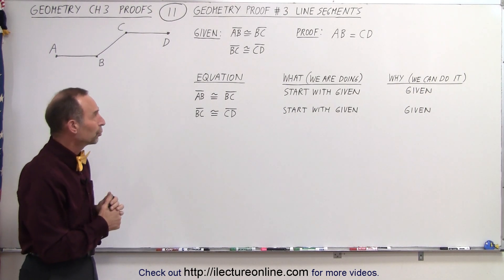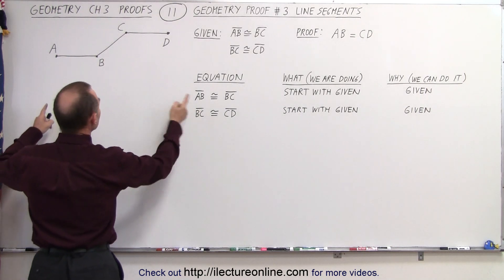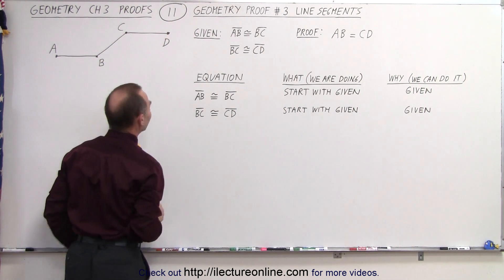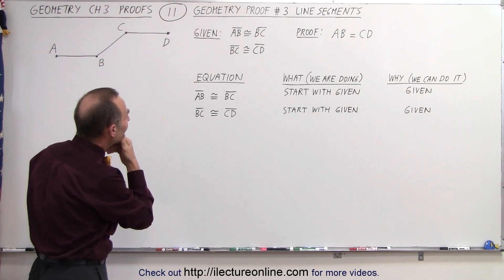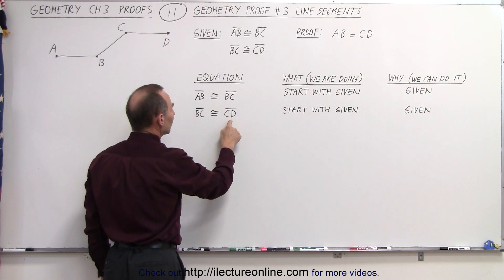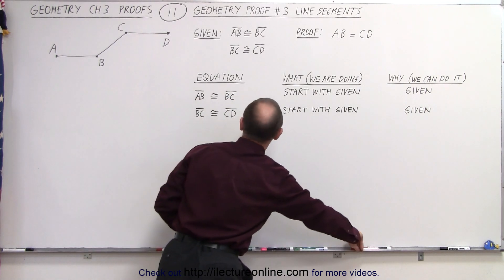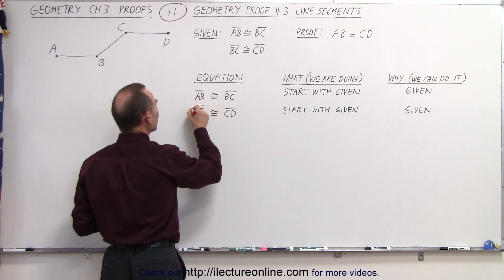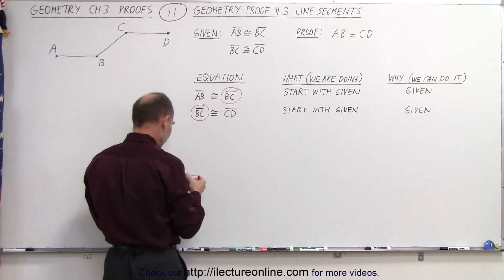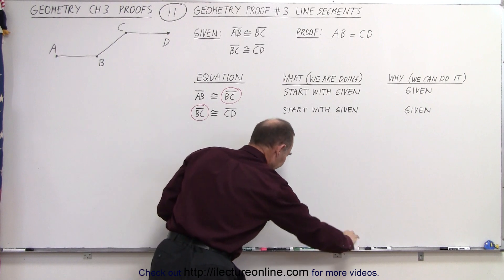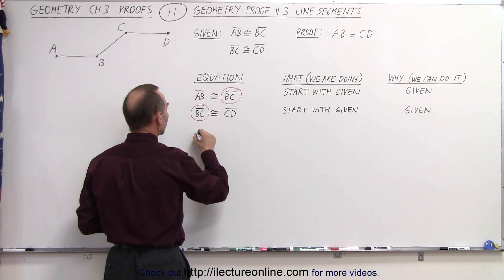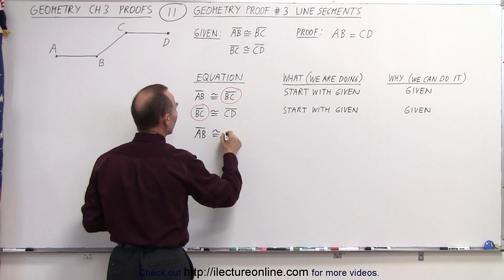Now, how do we get to our proof? Well, if we take a look, what we're saying is that this line segment is congruent to this line segment, and then this line segment is congruent to this line segment. So it looks like we might be able to substitute something. Notice if AB is congruent to BC and BC is congruent to CD, we can say that BC is congruent to CD and BC is congruent to AB — we can make that replacement. Instead of writing line segment BC, we write line segment AB, since they are congruent, and so now we end up with line segment AB is congruent to line segment CD.